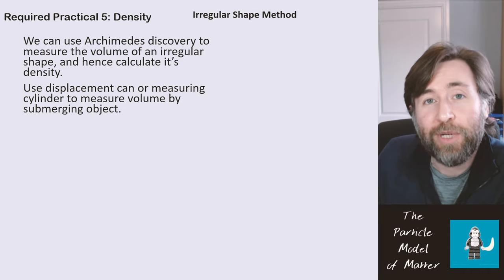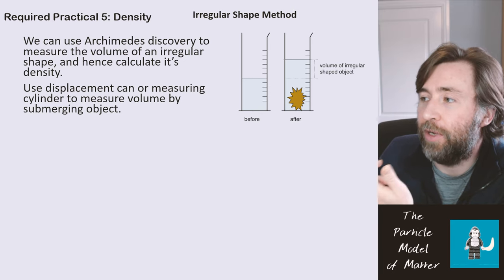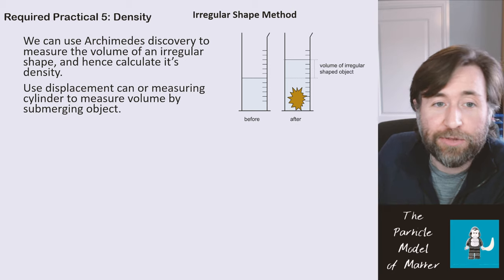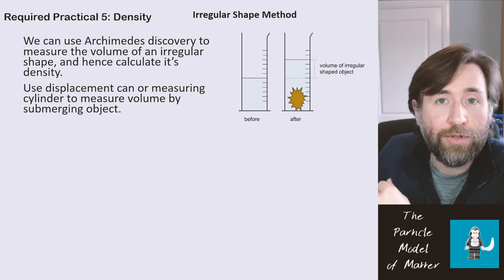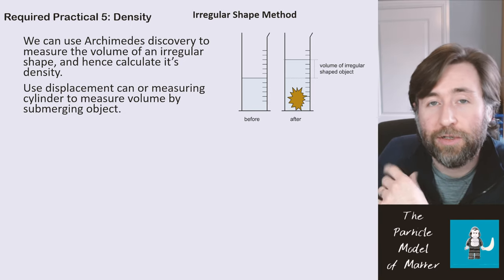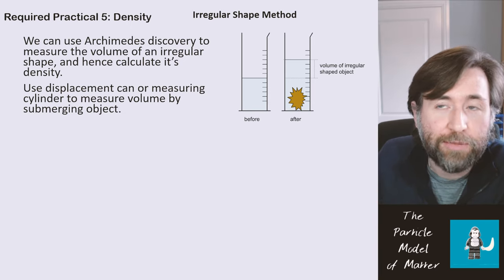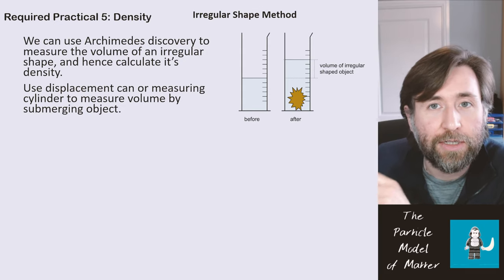And you can use a displacement can, or you can just use a measuring cylinder, to measure the displacement by an irregular shape. So if you have a measuring cylinder with some liquid in it, and you place the shape in, then the volume will appear to increase on the measuring cylinder. And the difference between those will be the volume of the irregular shape. That's not very hard to understand, but make sure you can explain that in really clear and accurate terms.